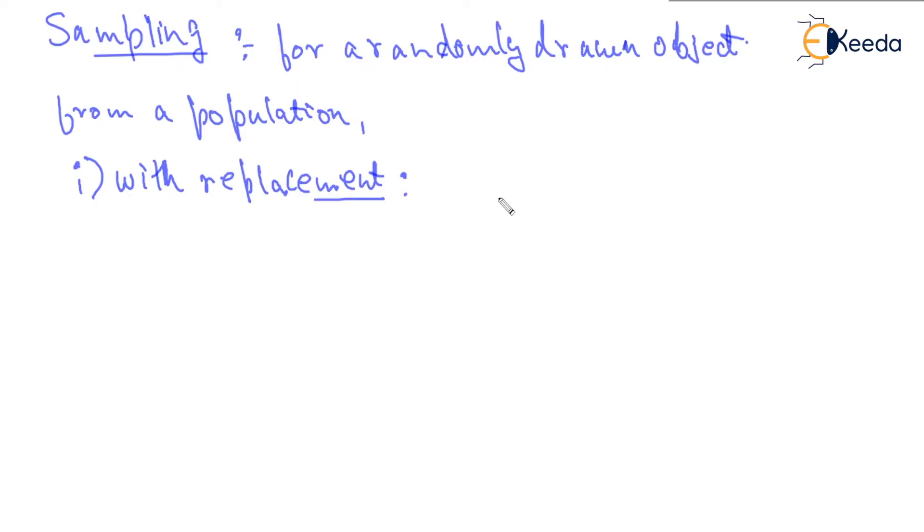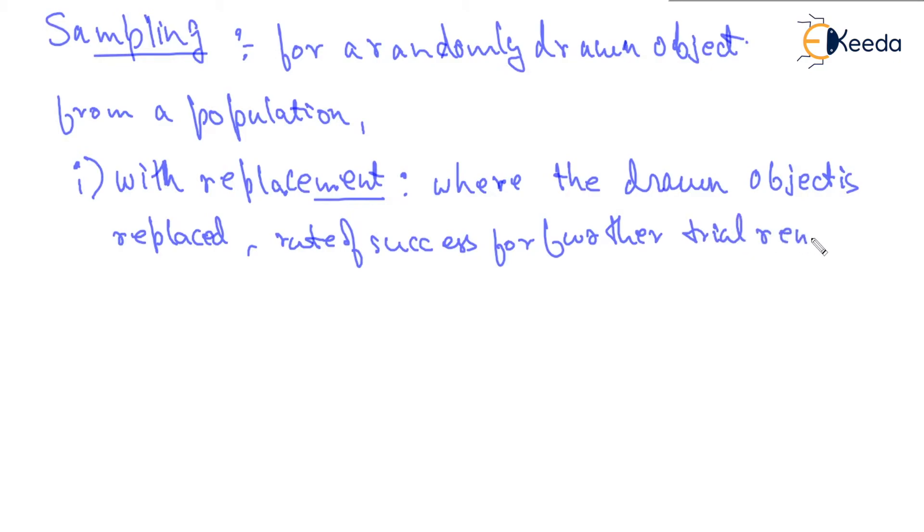So with replacement is where the drawn object is replaced, the rate of success for further trial remains same. That is, the probability of getting a red ball in the first trial will be the same in the second trial also, because we are putting the ball back.